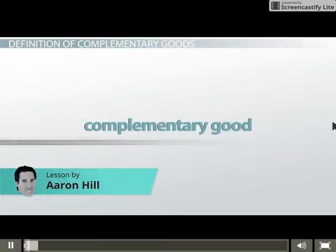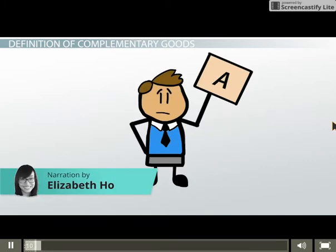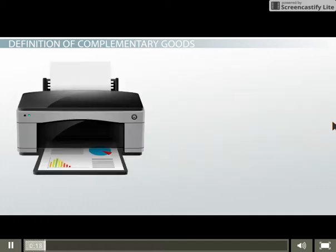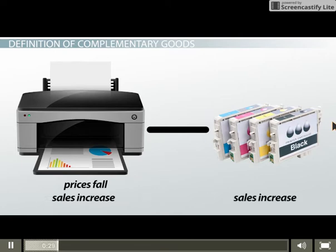A complementary good is a good whose use is related to the use of an associated or paired good. Two goods, A and B, are complementary if using more of good A requires the use of more of good B. For example, the demand for one good generates the demand for the other. If the price of one good falls and people buy more of it, they will usually buy more of the complementary good also, whether or not its price also falls.